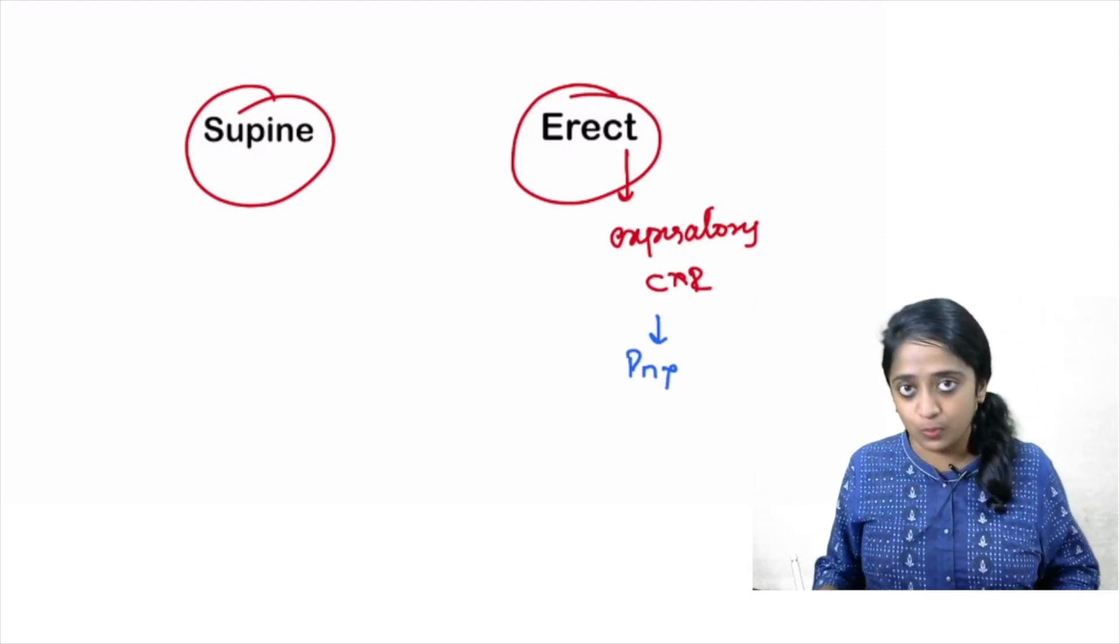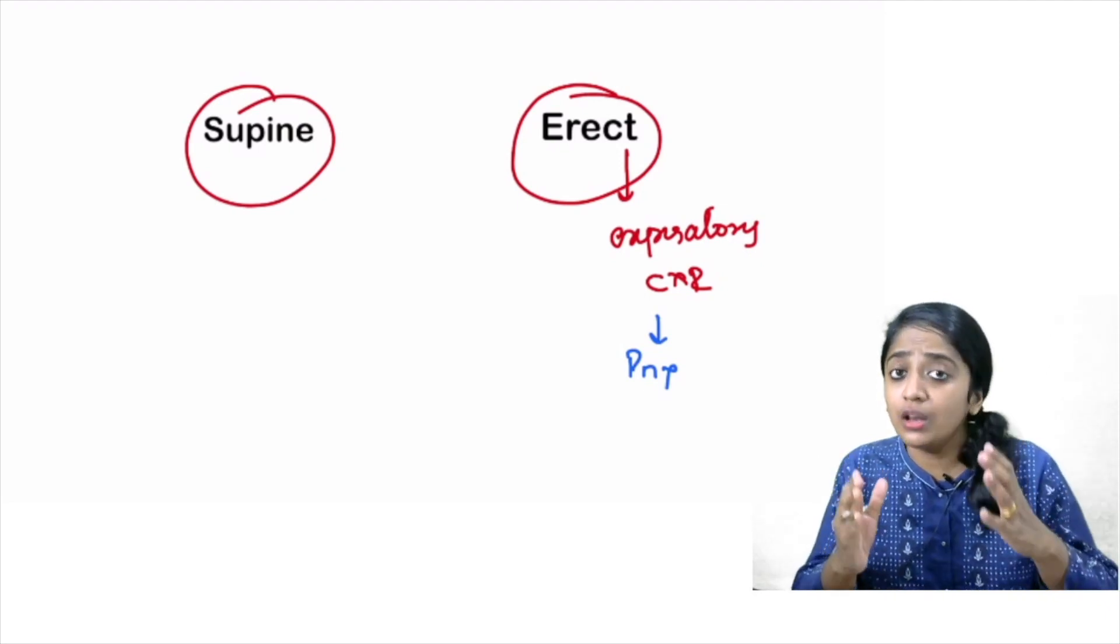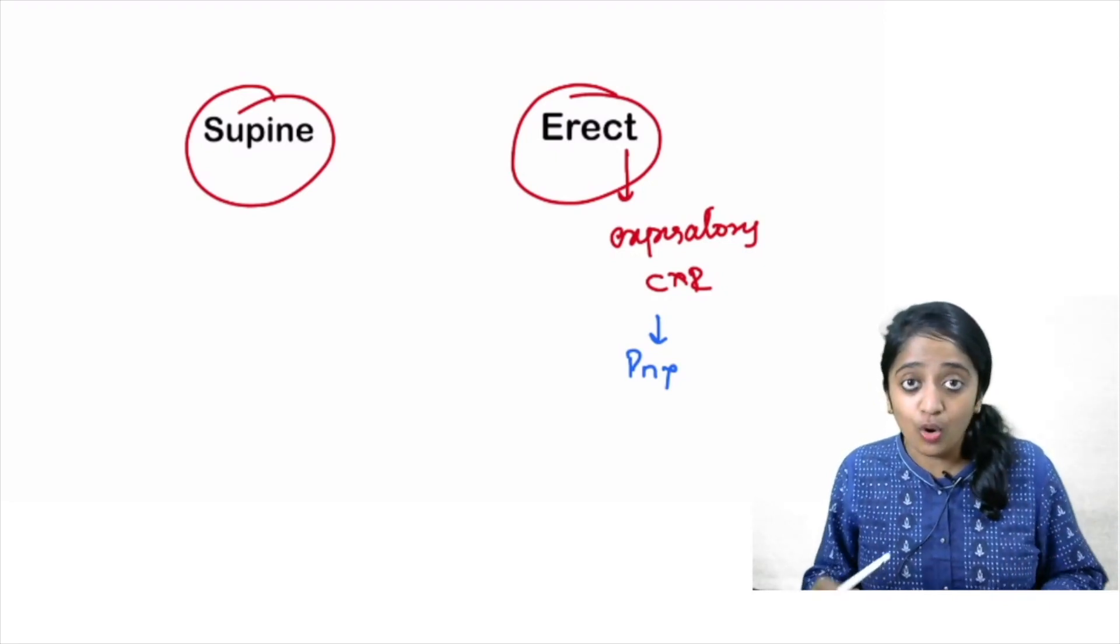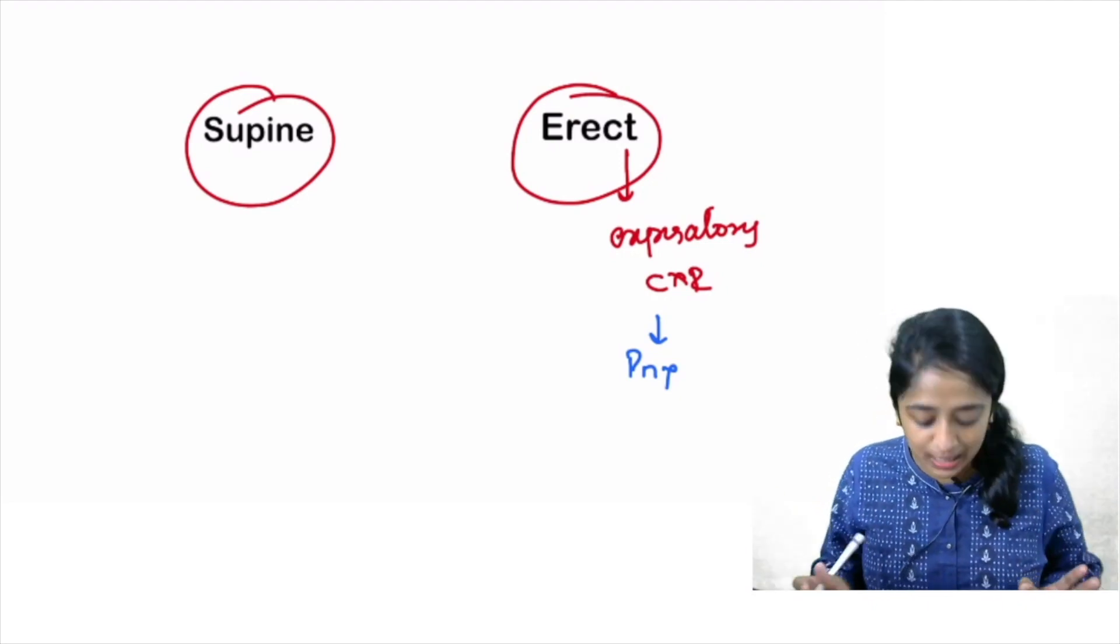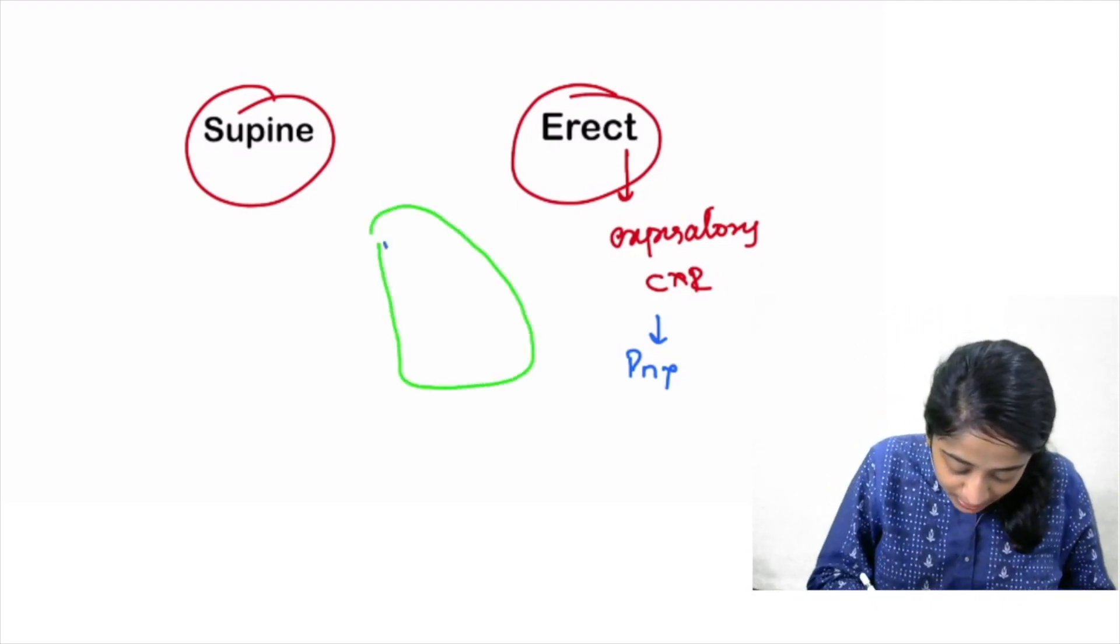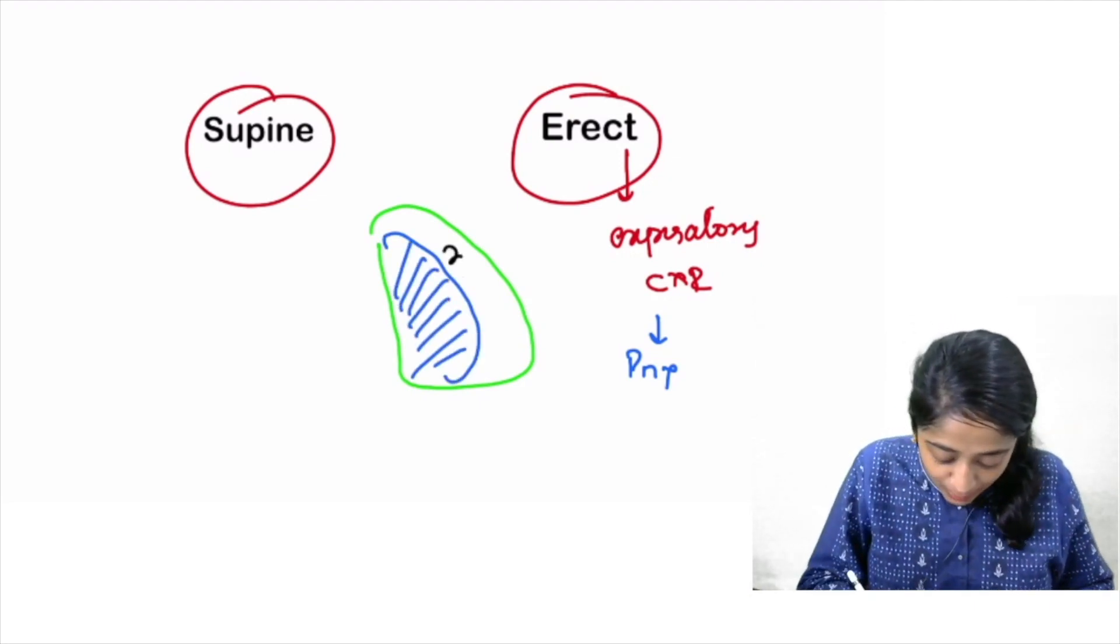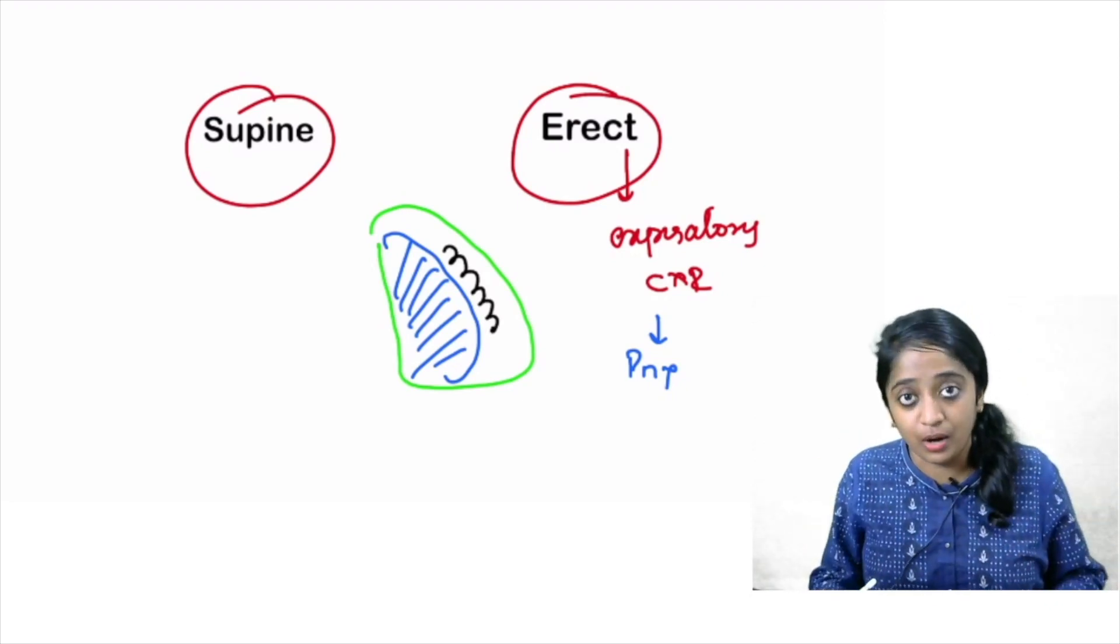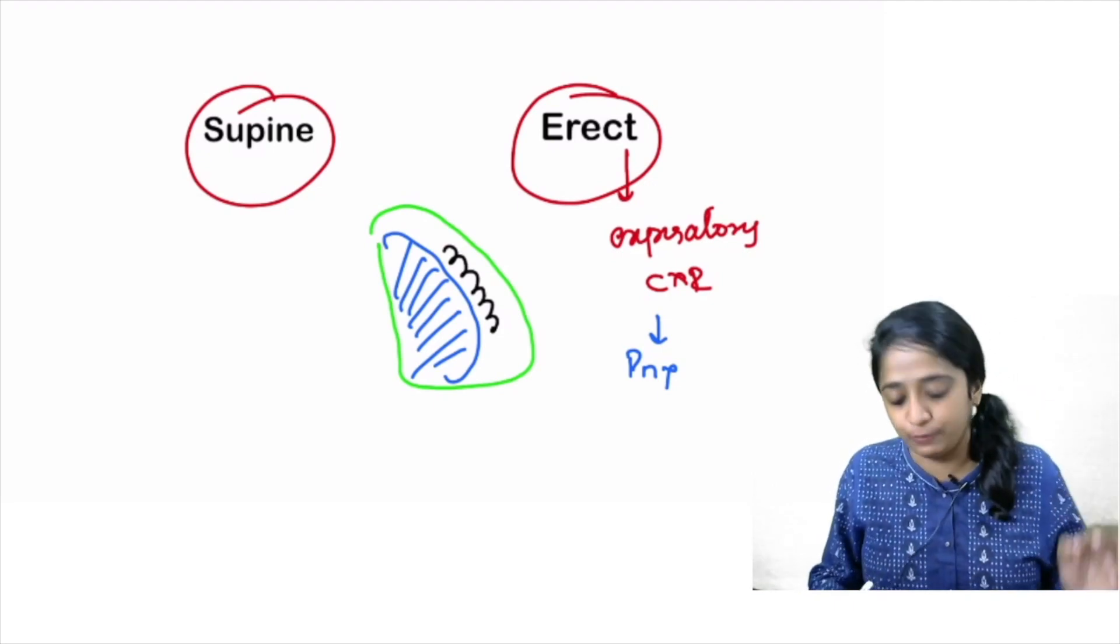So I'll give you the reason why. So when you're expiring, what happens? The lung volume reduces. So whenever the lung volume reduces, the lung will appear apparently more denser. But the air within the pleural cavity will still remain the same. So that brings out a sharp contrast. Thus there is a sharp contrast brought about and you can easily pick up pneumothorax in case of expiratory radiograph.